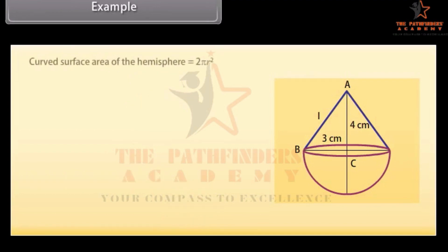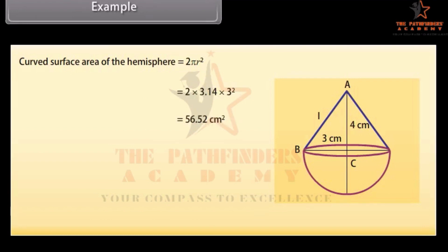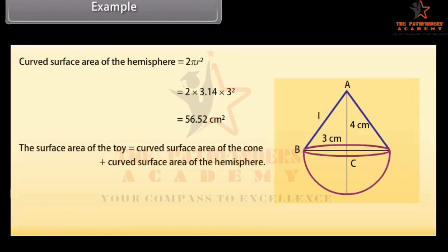Now, the curved surface area of the hemisphere equals 2πR² = 2 × 3.14 × 9 = 56.52 cm². Hence, the total surface area of the toy equals the curved surface area of the cone plus the curved surface area of the hemisphere = 47.1 + 56.52 = 103.62 cm².